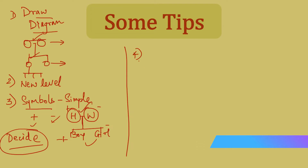The next tip is: no useless relations. Relations like girlfriend, boyfriend are not asked in the exam, so don't think about them. Also, a husband having two wives is not allowed — absolutely not allowed. No such relations appear in exams, so do not consider them. Just focus on whatever is given in the exam.